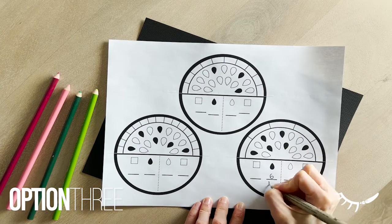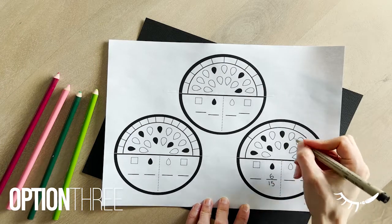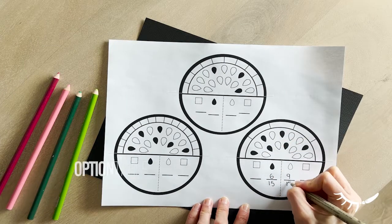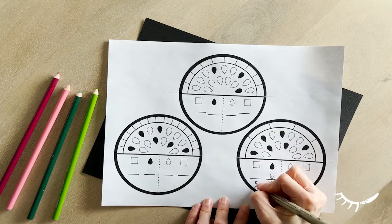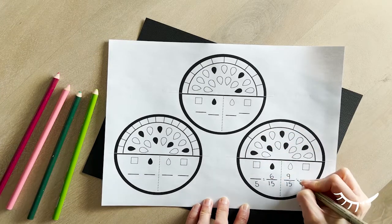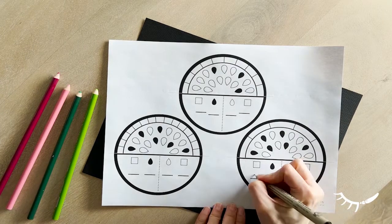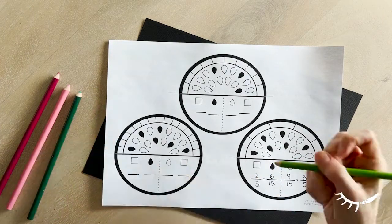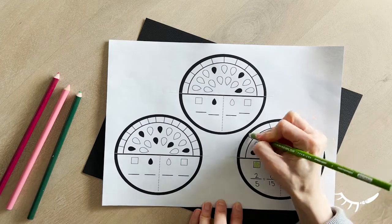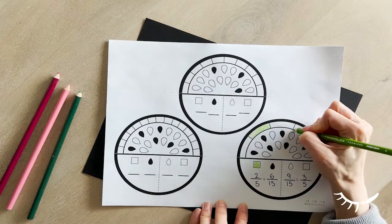Option 3 shows a variety of fractions on each of the slices. Start by counting the seeds and recording the seed fraction. Then build an equivalent fraction using the rind segments, or build a different fraction using the rind, depending on the lesson objectives and ability. Color the rind to represent the fraction.